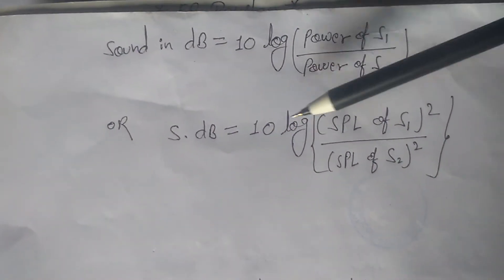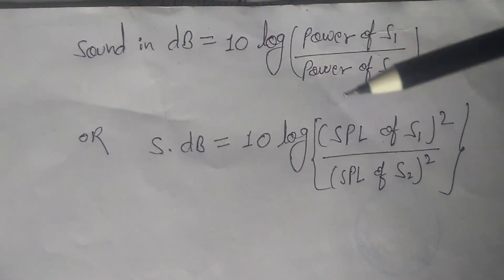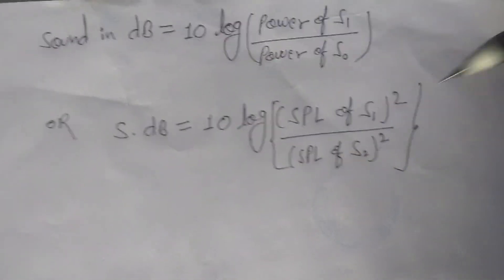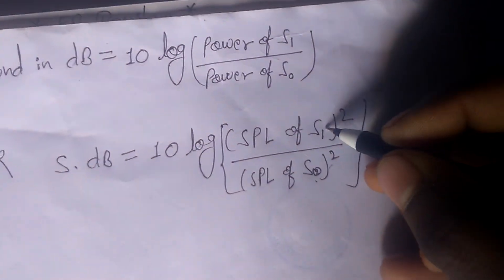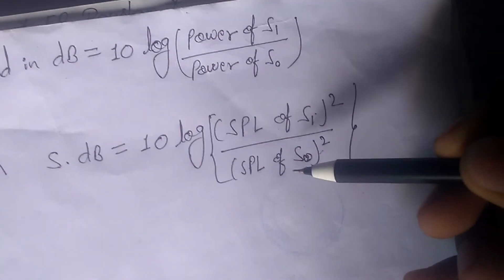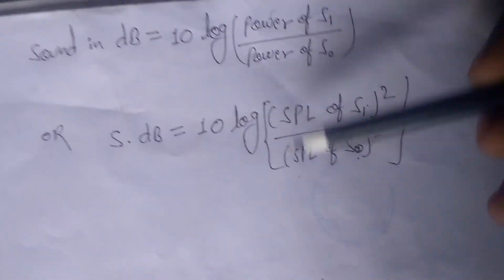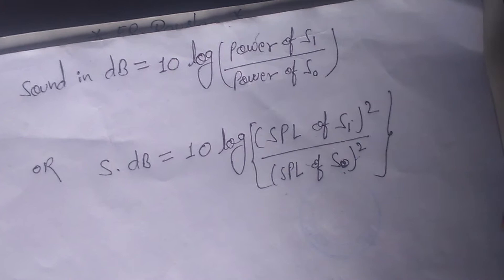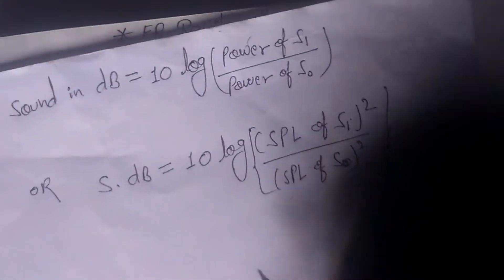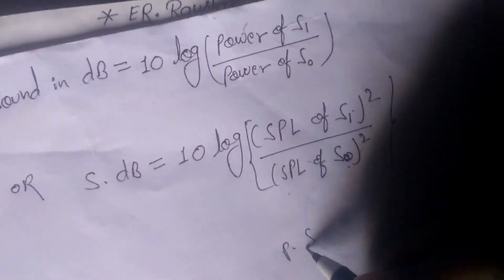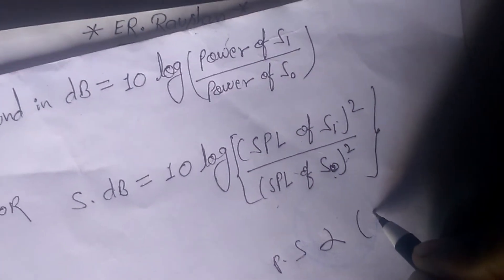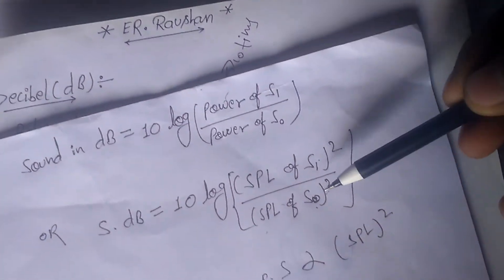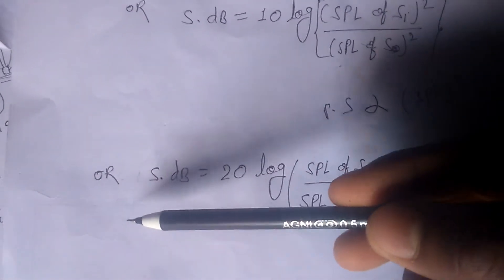Another way we can write this: sound in decibel equals 10 log of SPL (sound pressure level) of S1 squared divided by SPL of S0 squared, where S0 squared is the reference. Both formulas are the same because the power of sound is directly proportional to the square of SPL.